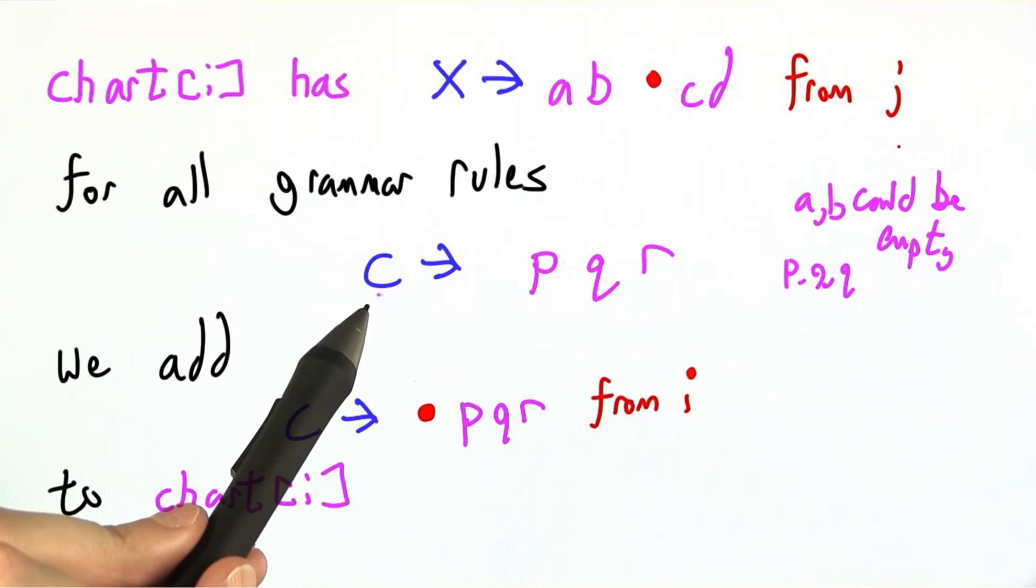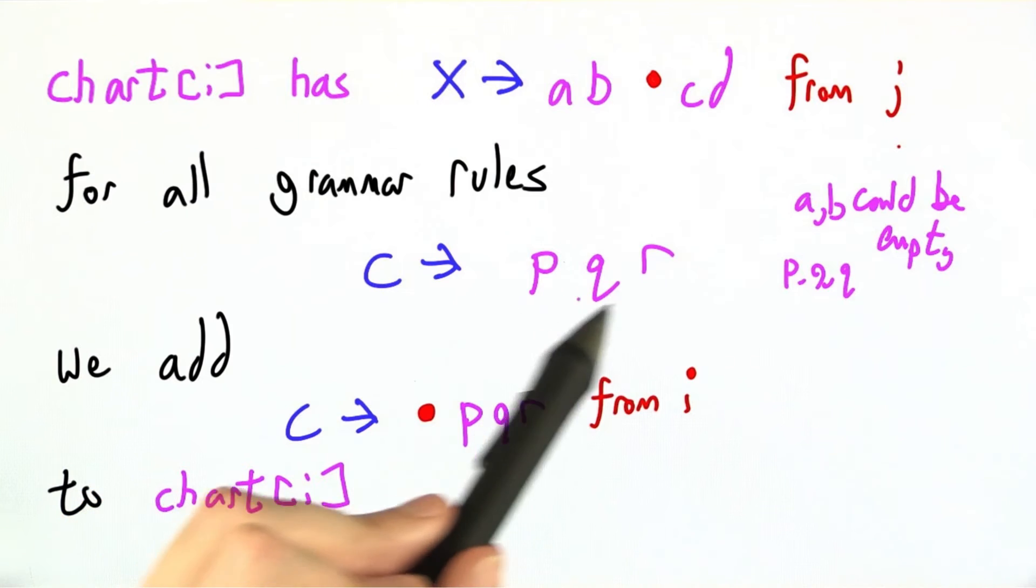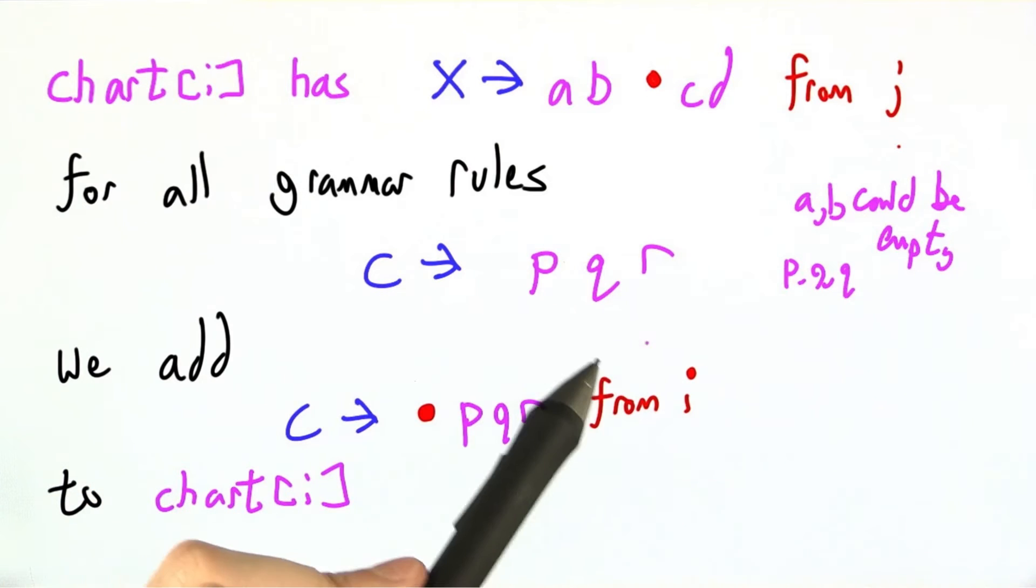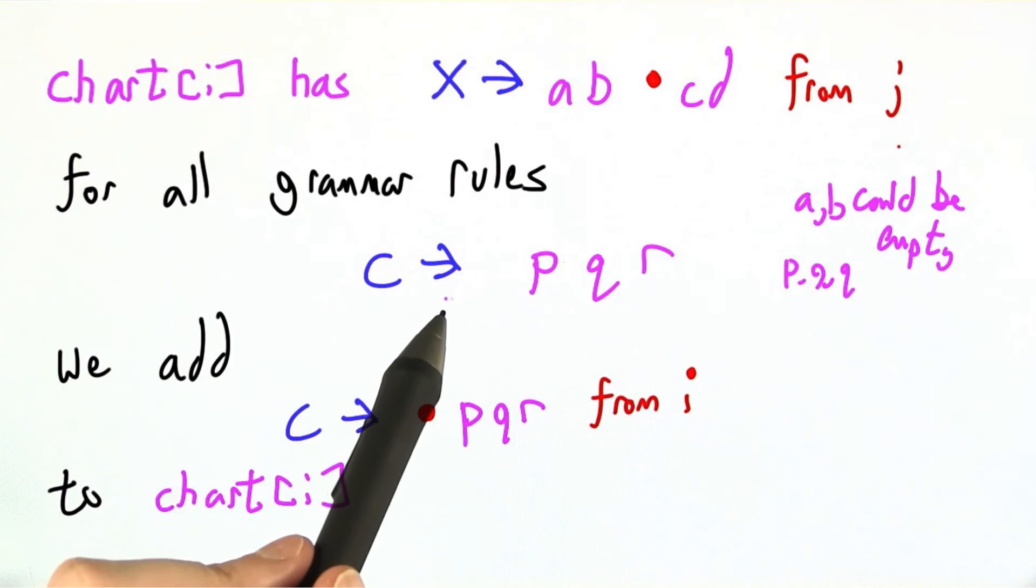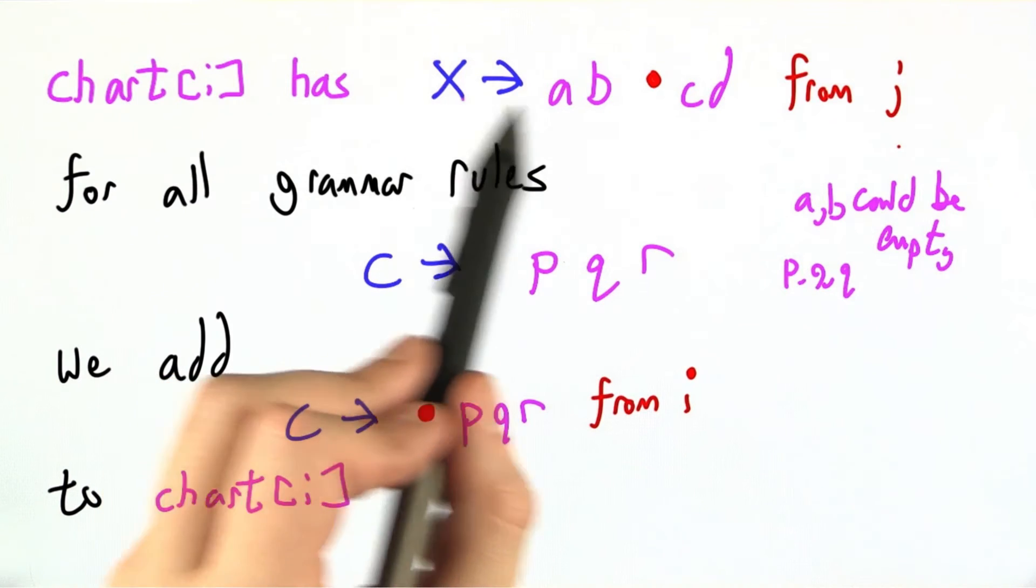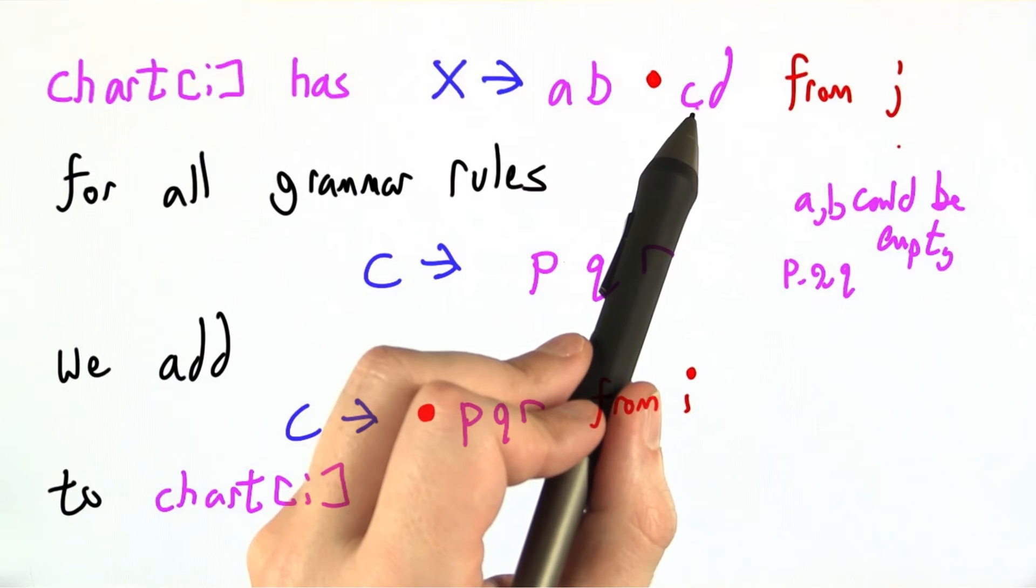So for every such grammar rule, C goes to PQR, C goes to anything. We believe ultimately that we're going to see a C in the future.